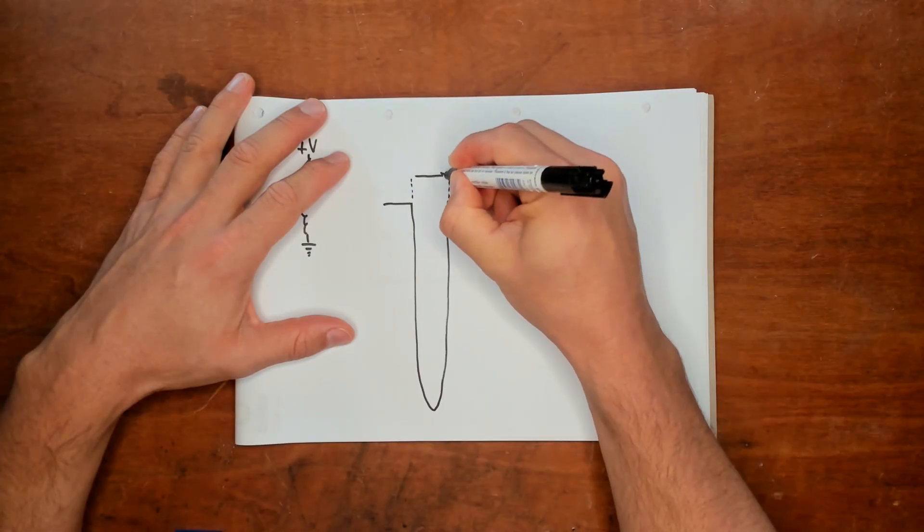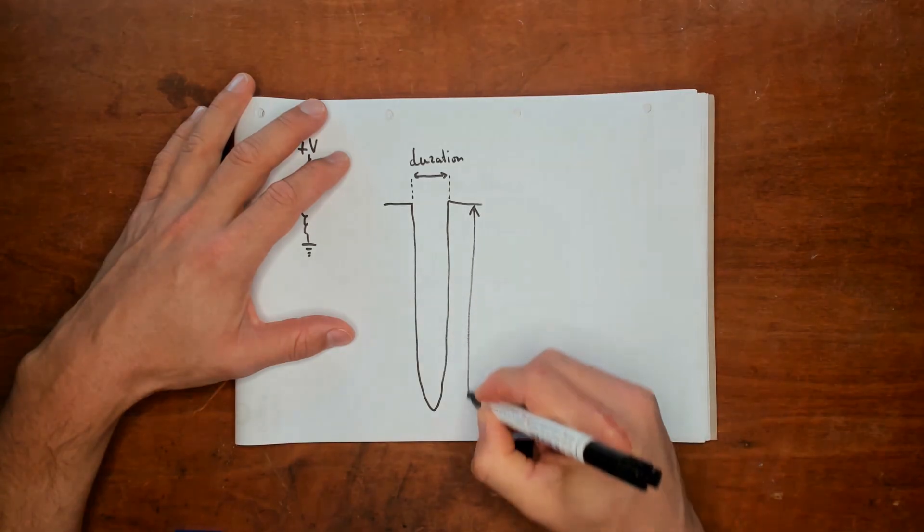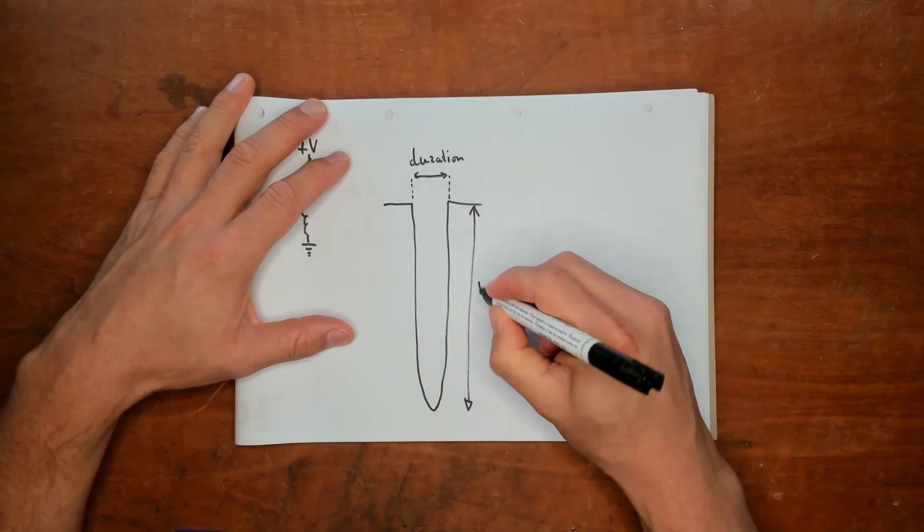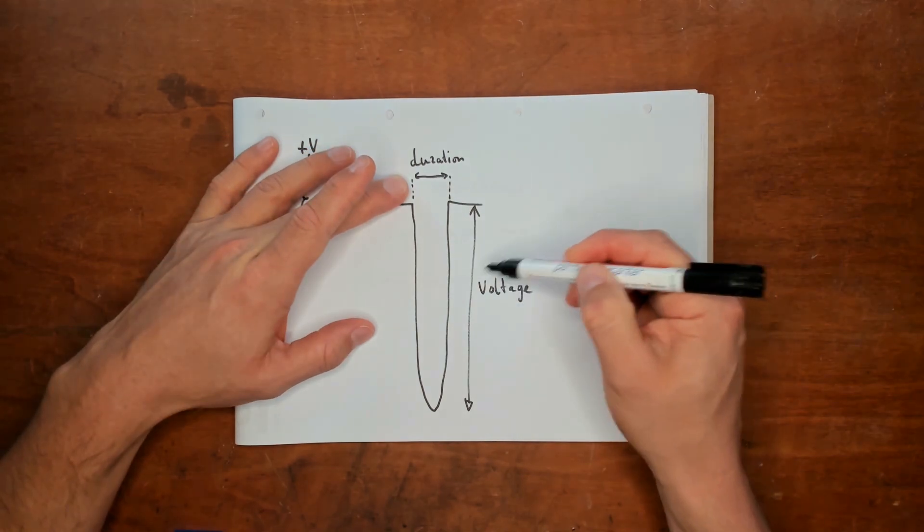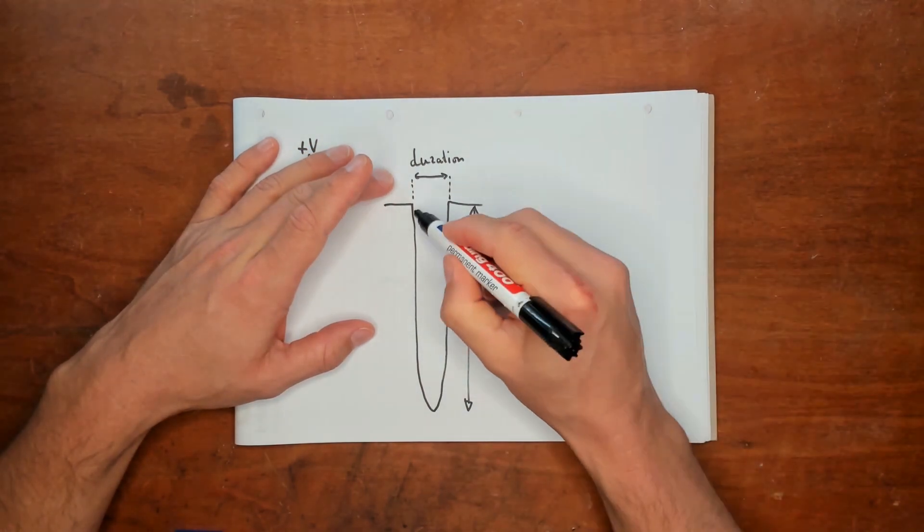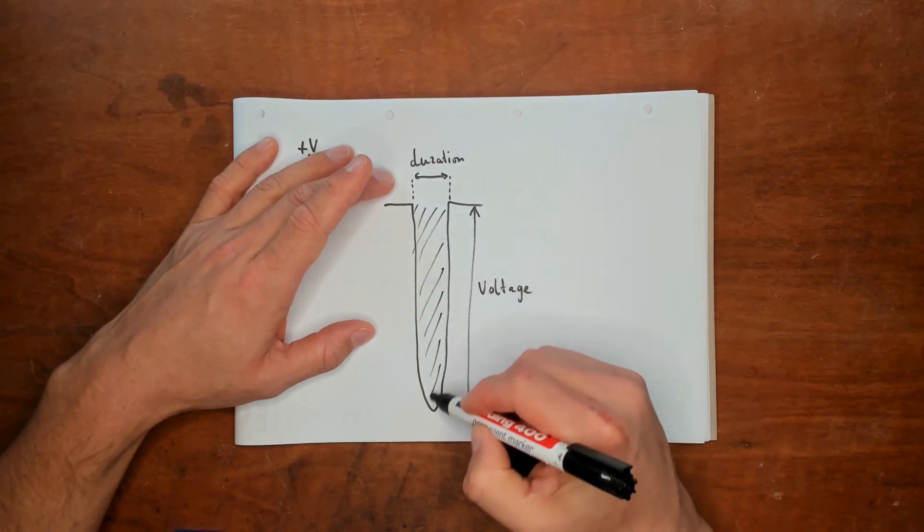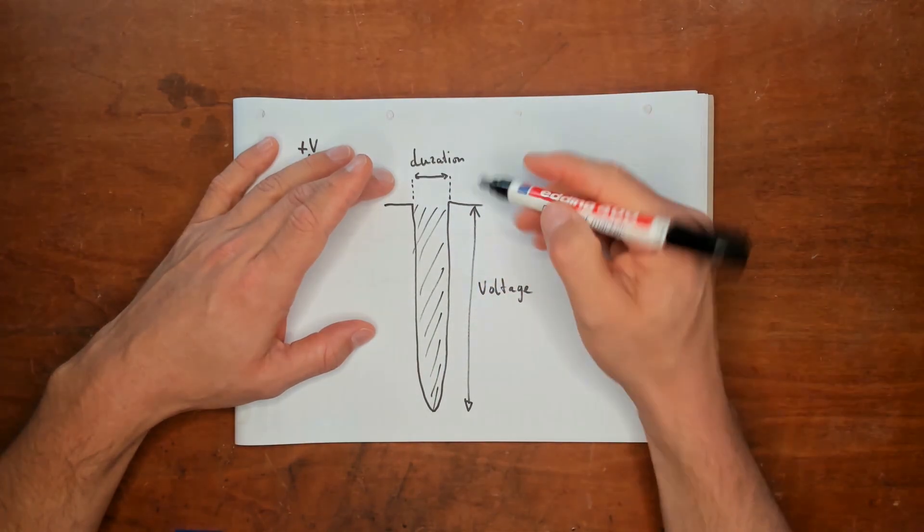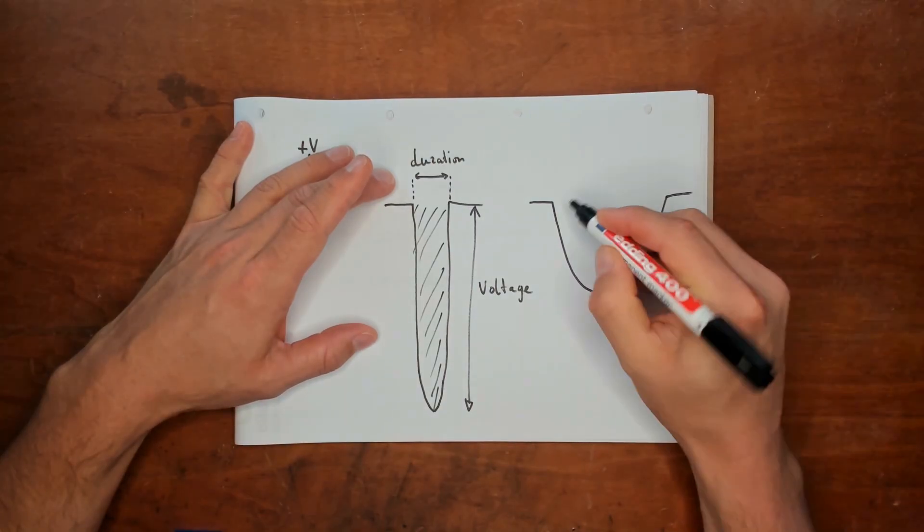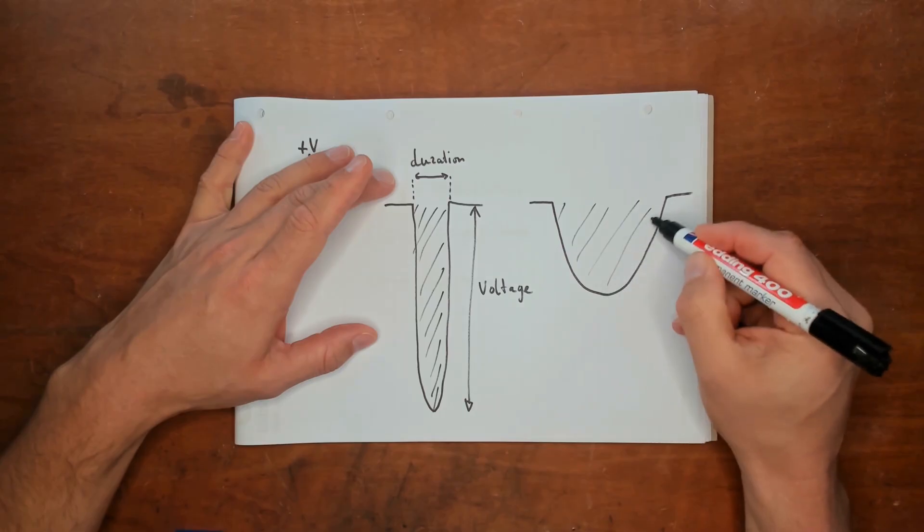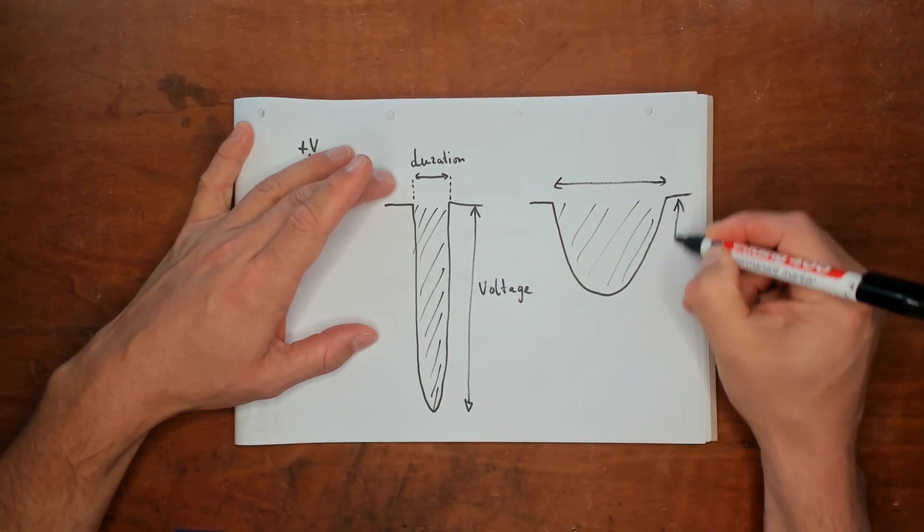The duration should be really short. The shorter the duration the higher the voltage will be because the energy is related to the surface area of this spike. With a longer duration you will have less voltage but the same surface area.